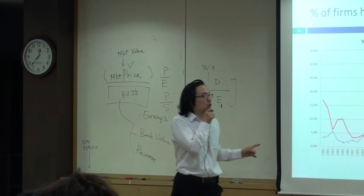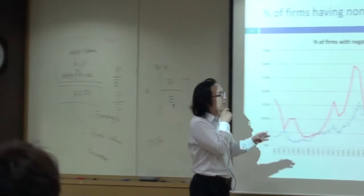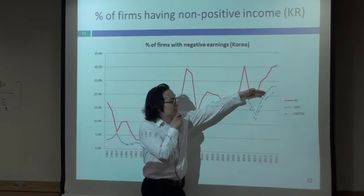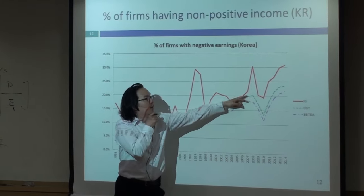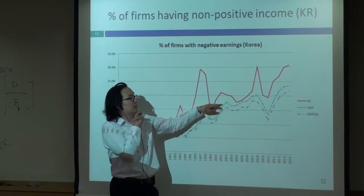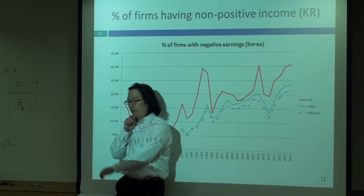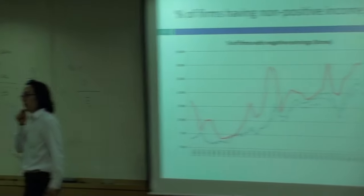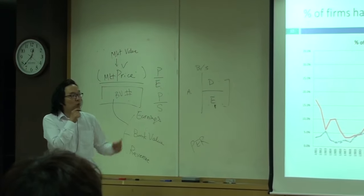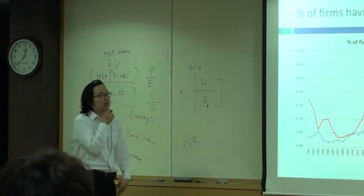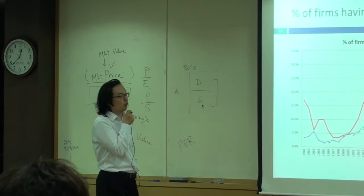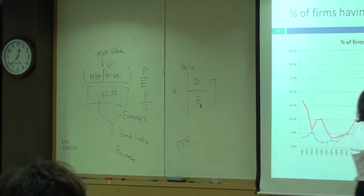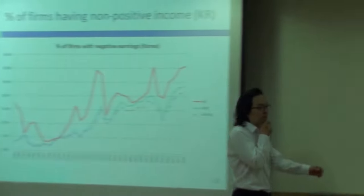If you look at the proportion of companies that have negative operating income, it's a lot less than when you looked at net income. Quite natural — operating income or EBITDA is less likely to have negative numbers. So you have to be flexible.